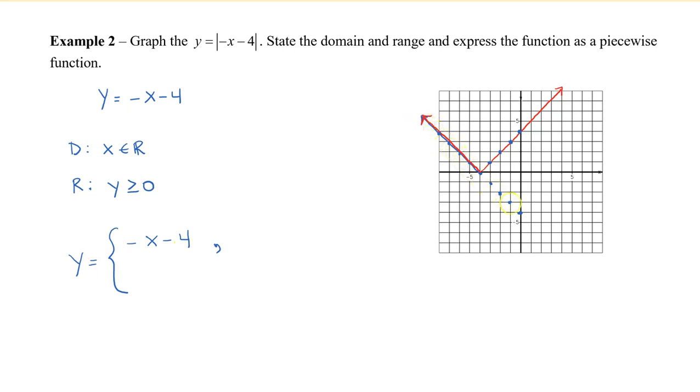And we can see that's going to be negative x minus 4. So this line here, this left side, this will occur when x is less than or equal to negative 4, because that is actually where our vertex is. So this occurs when x is less than or equal to negative 4.